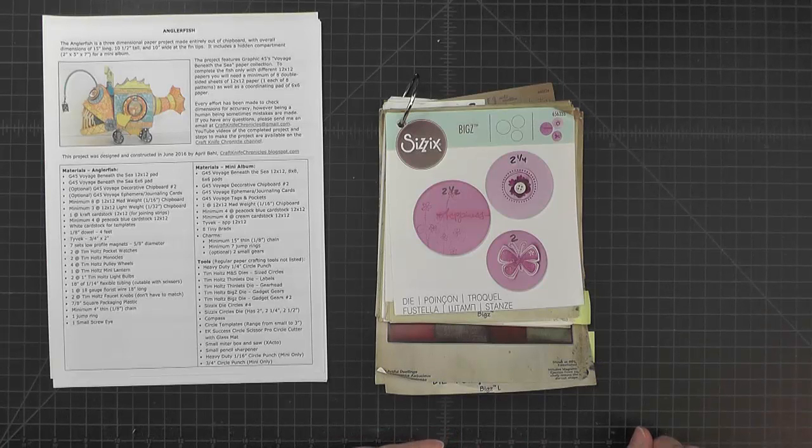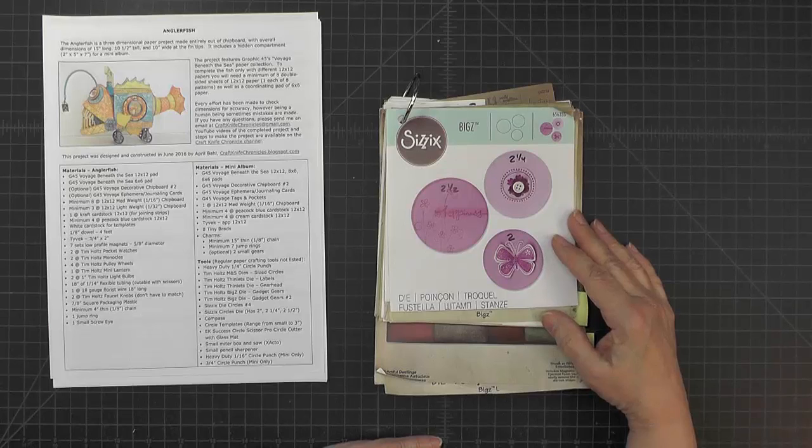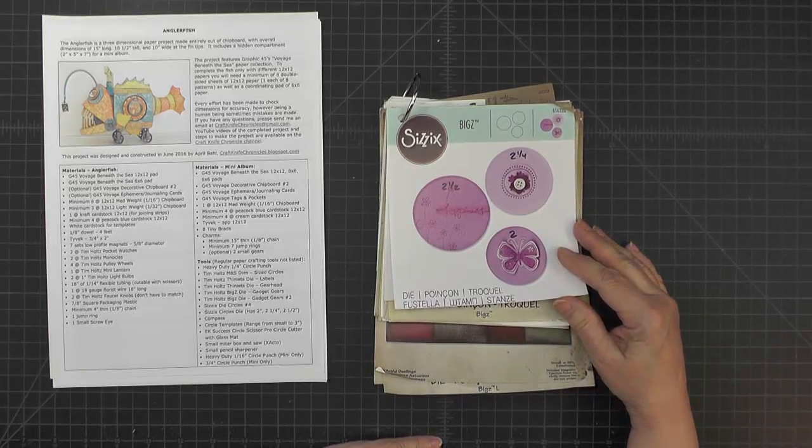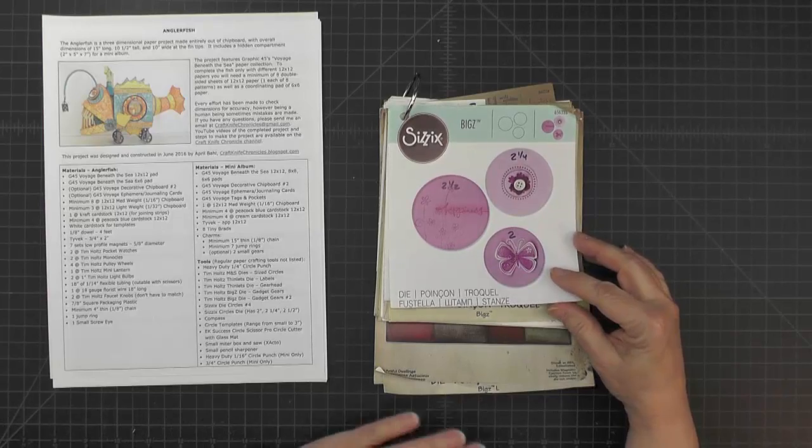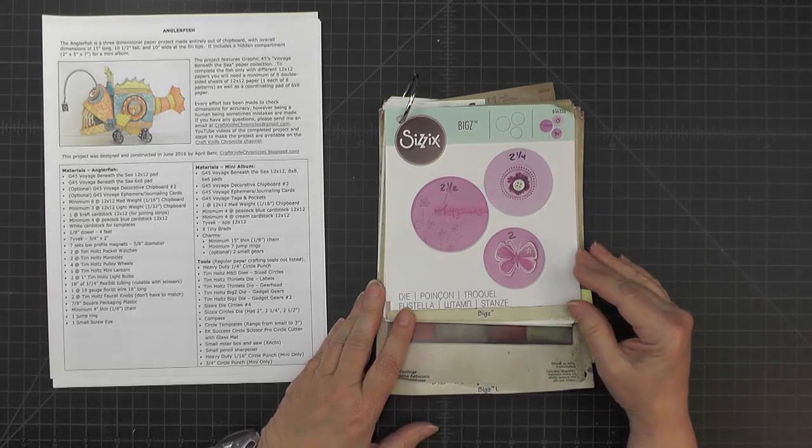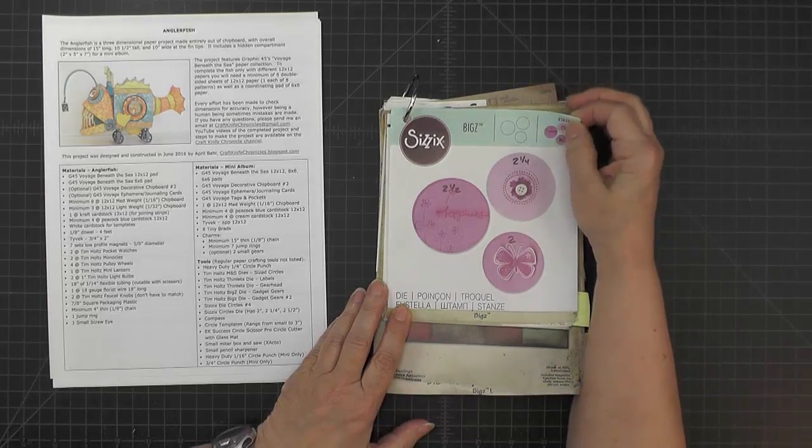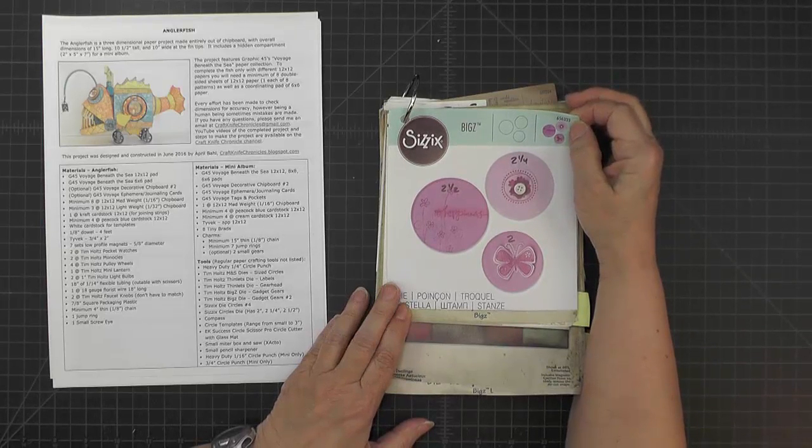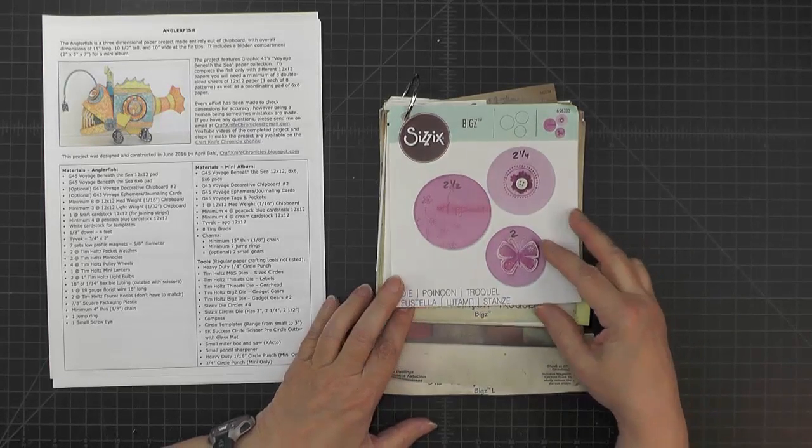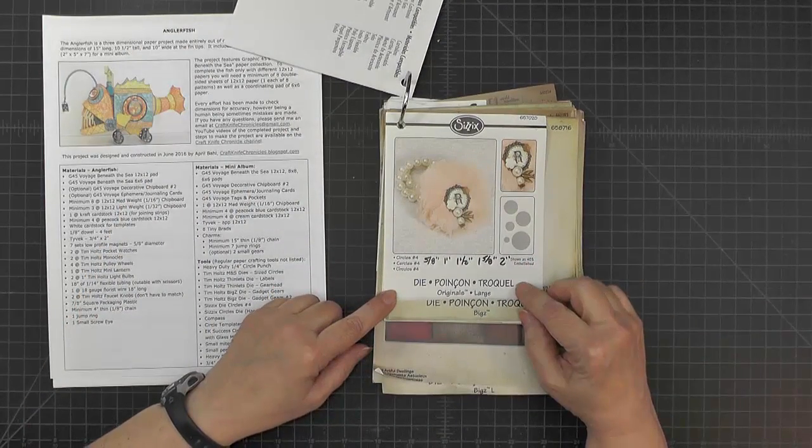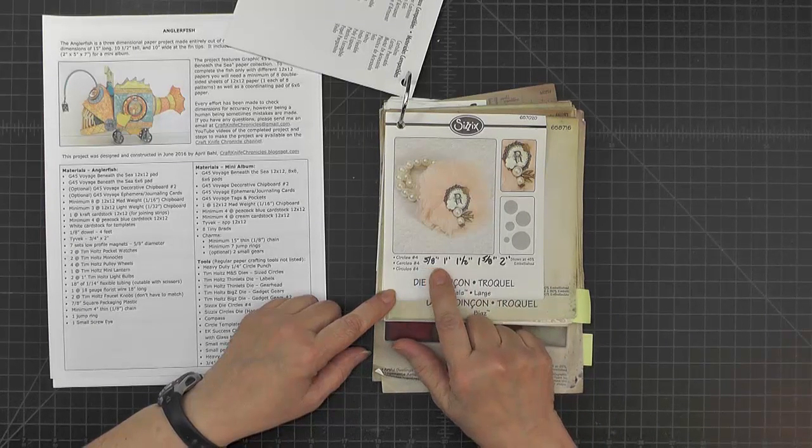I used a variety of dies in this project. Some of them, like these circle dies, just make life a lot easier. This one is a Sizzix die, number 656333, and it cuts 2 inch, 2 1/4 and 2 1/2 inch circle. And then circles number 4 has five different circle sizes on it ranging from 5/8 up to 2 inches.